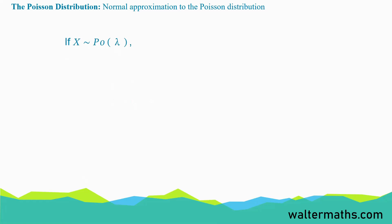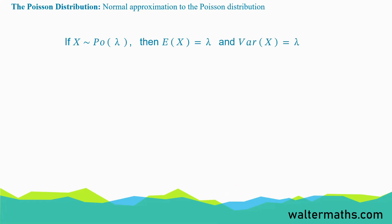You need to know that if X follows a Poisson distribution with parameter lambda, the expectation of X is lambda, and the variance of X is also lambda. So that's something very important for you to know.